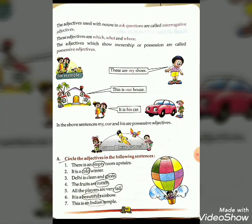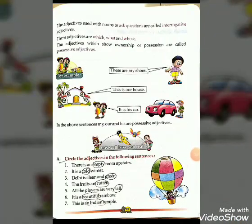Sixth: 'It is a beautiful rainbow' — the word 'beautiful' is the adjective, you have to circle it. Seventh: 'It is an Indian temple' — the adjective is 'Indian.' This is your homework. Please fill in your textbook also and do it in your notebook. Thank you so much. God bless you.